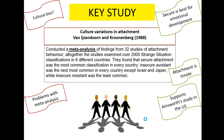Our second key study is Van IJzendoorn et al., which we looked at earlier in types of attachment. It's a meta-analysis — a collation of different studies that have already been done. They looked at the conclusions of 32 different studies, and across eight different countries they found that secure attachment was the most common type in every country. This again shows that attachment is quite innate, and that secure attachment is probably the best for emotional development.